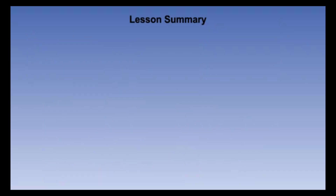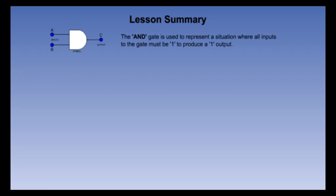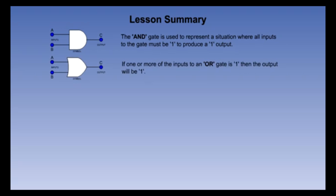Here is a summary of the main points from the lesson. The AND gate is used to represent a situation where all inputs to the gate must be one to produce a one output — if any input is a zero, the output will be zero. If one or more of the inputs to an OR gate is one, then the output will be one. The OR gate will only give a zero output if all of its inputs are zero.